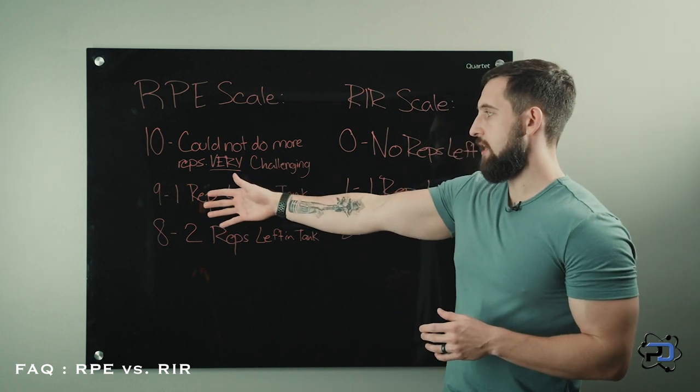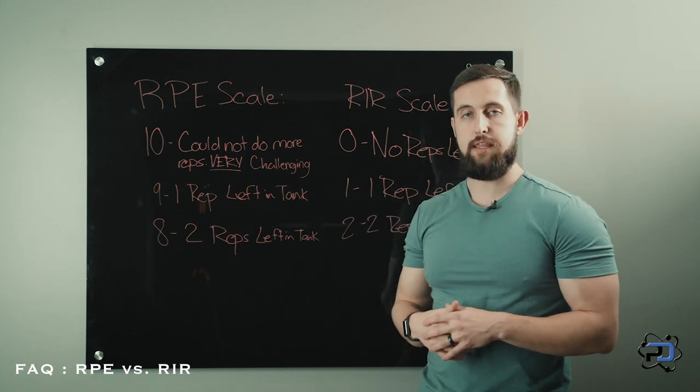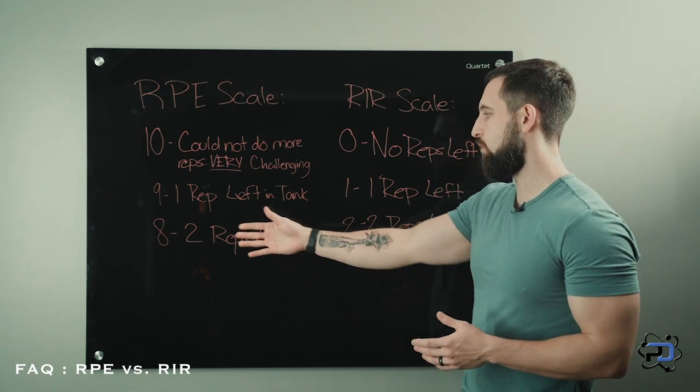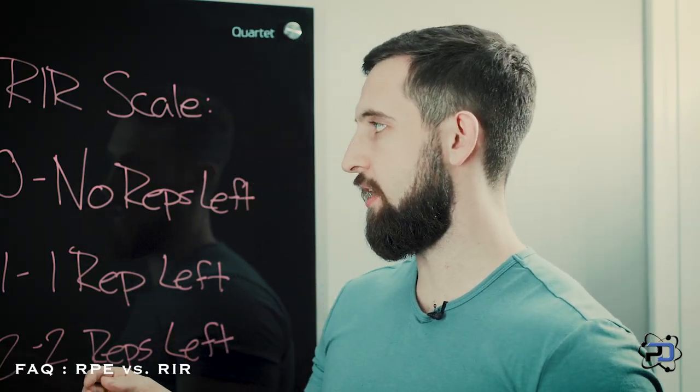Ranking a 9 would mean you have one repetition left in the tank, and rating an 8 would mean you have two repetitions left in the tank.